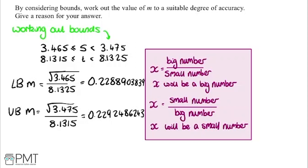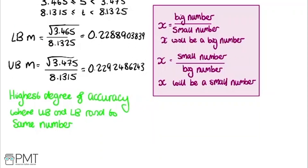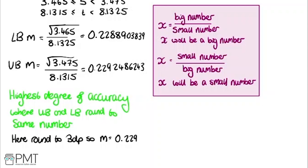We look for the highest degree of accuracy at which the upper bound and lower bound round to the same number. To one decimal place, both give 0.2. To two decimal places, both give 0.23. To three decimal places, we get 0.229 and 0.229 — the same. To four decimal places, we get 0.2289 and 0.2292, which are different. So three decimal places is the highest accuracy where they agree, giving m = 0.229.